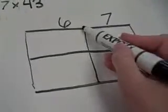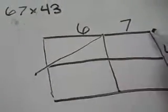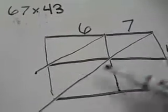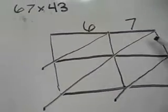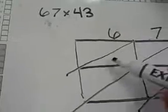The next thing I'm going to do in the lattice method is draw diagonals through these rectangles. What these diagonals are going to do is, once we do our multiplying, they will help us to add across our place values.